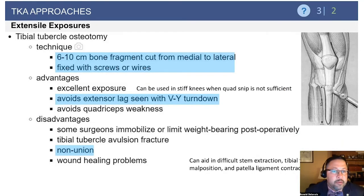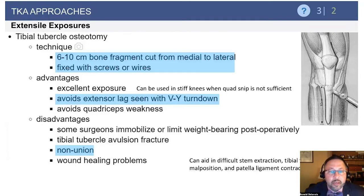The tibial tubercle osteotomy is another excellent exposure opportunity for removal of components. The key is the length of the bony fragment — you want it to be 6 to 10 centimeters to avoid fracture. If done well, it is an excellent approach without significant negative consequences for rehabilitation. You don't have the same extensor lag that can occur with a VY turndown. Disadvantages include tibial nonunion or potential fracture of the tibial tubercle as it becomes elevated.